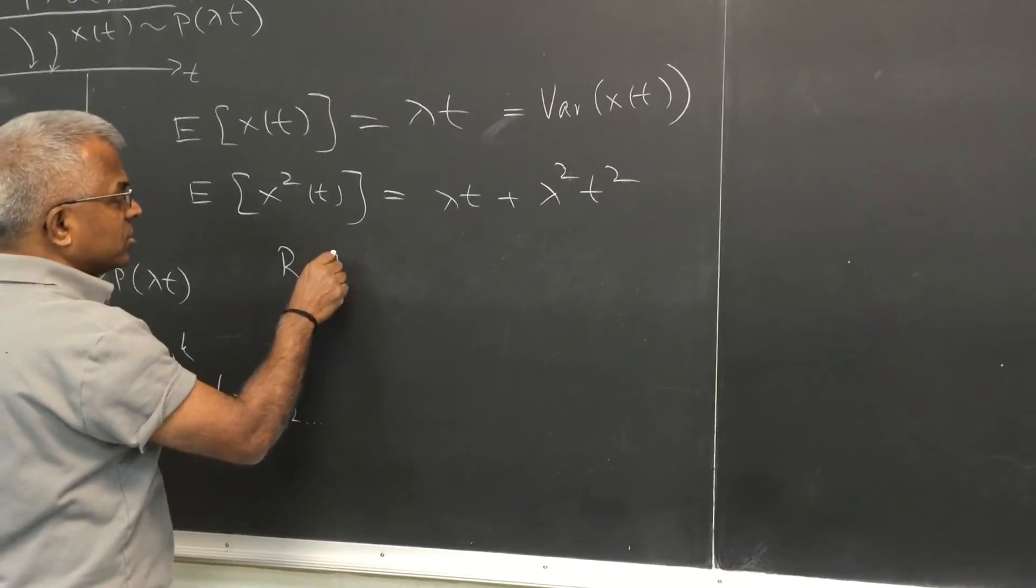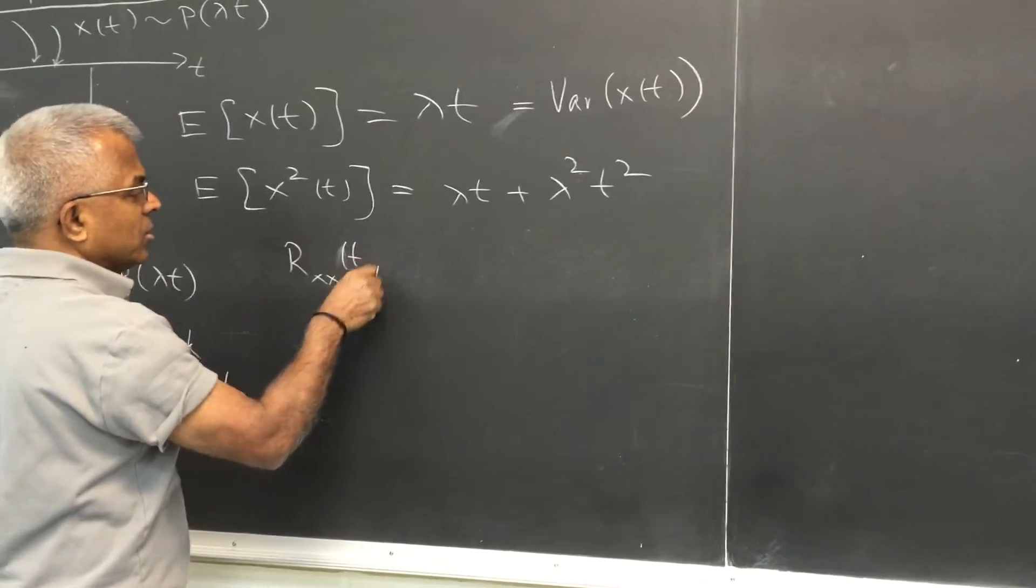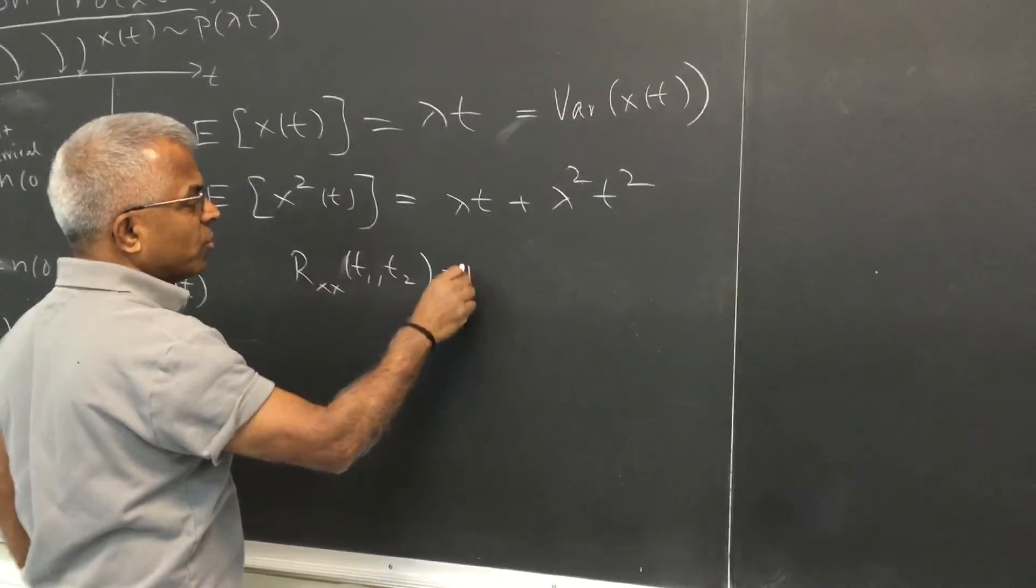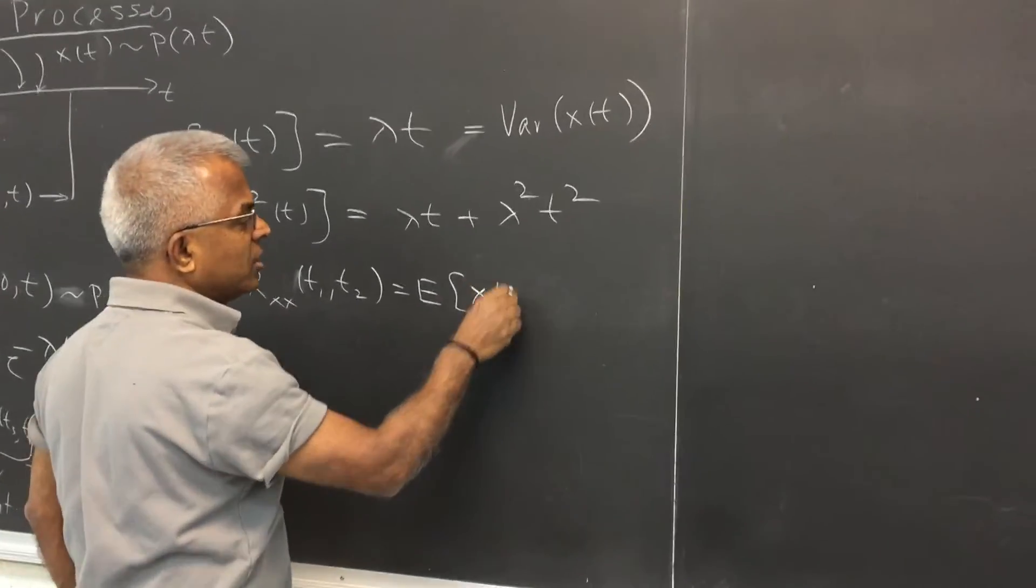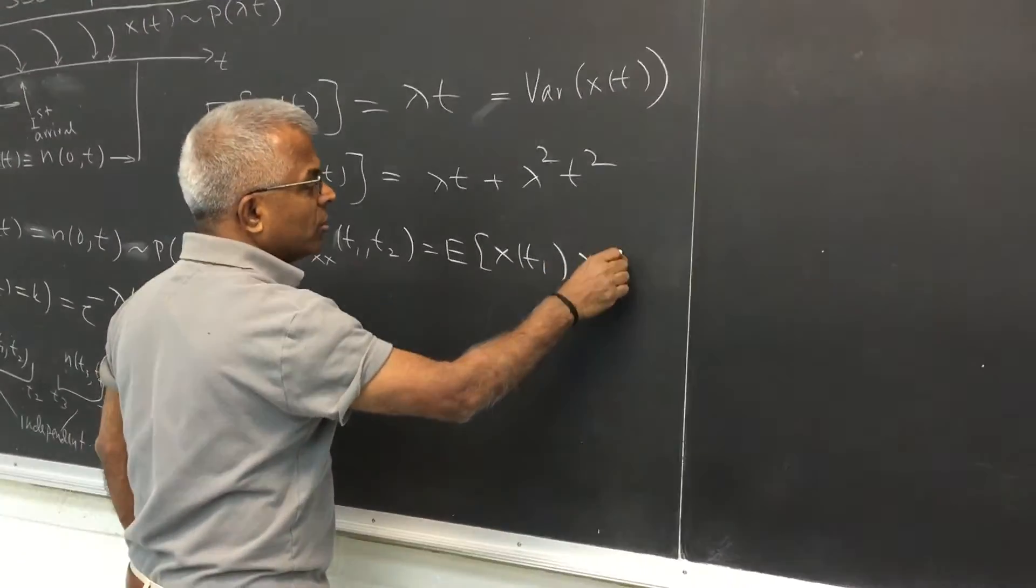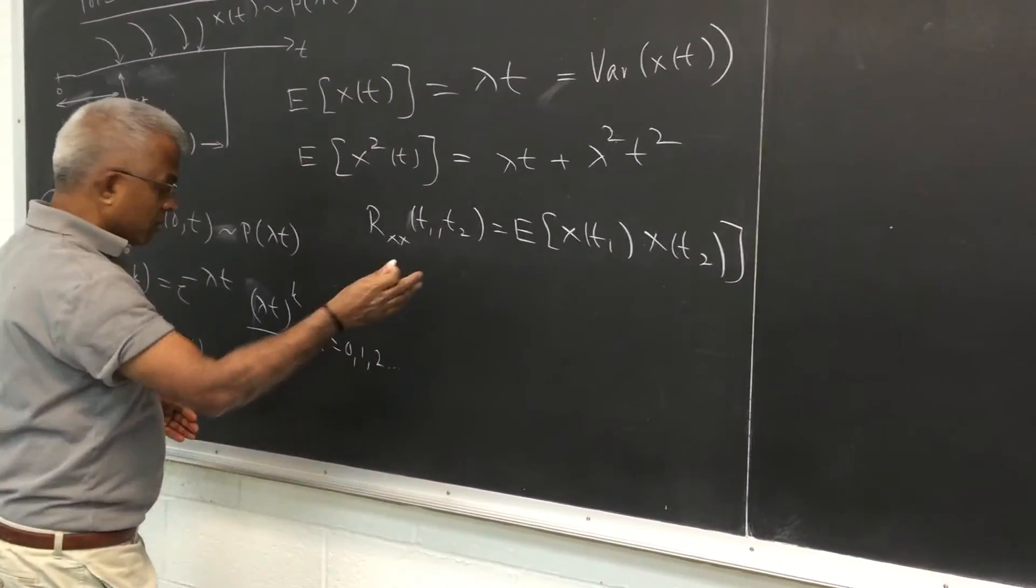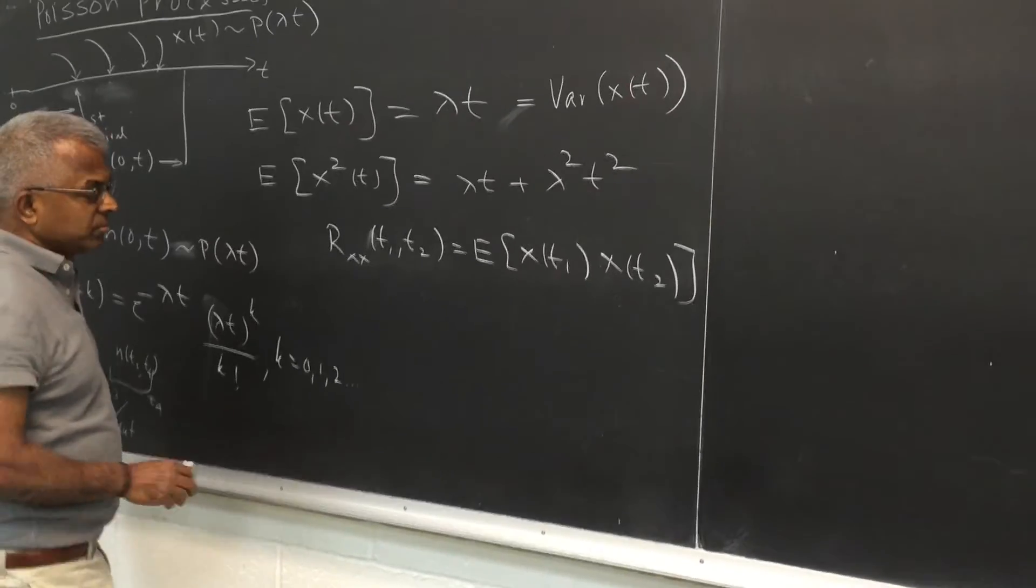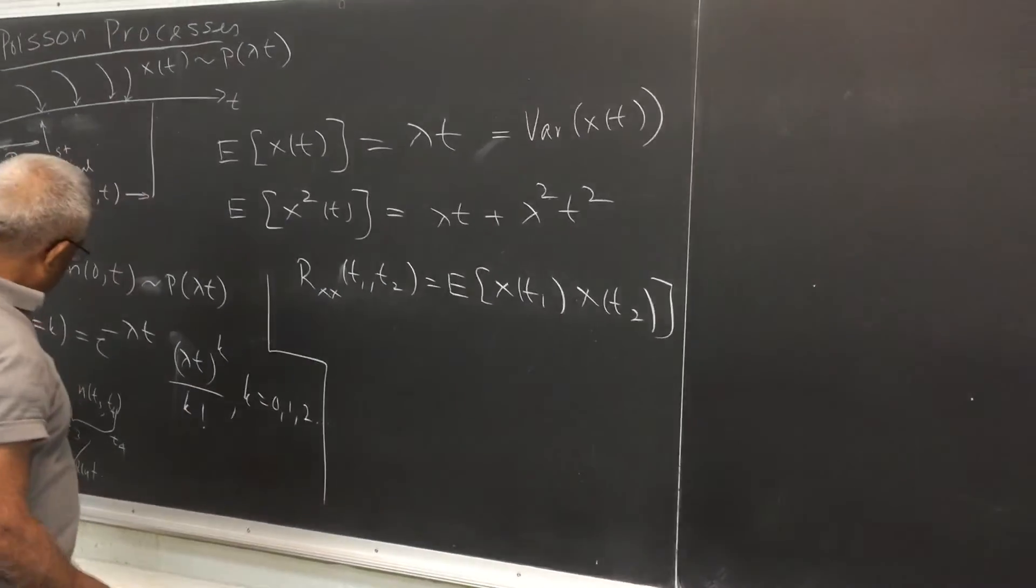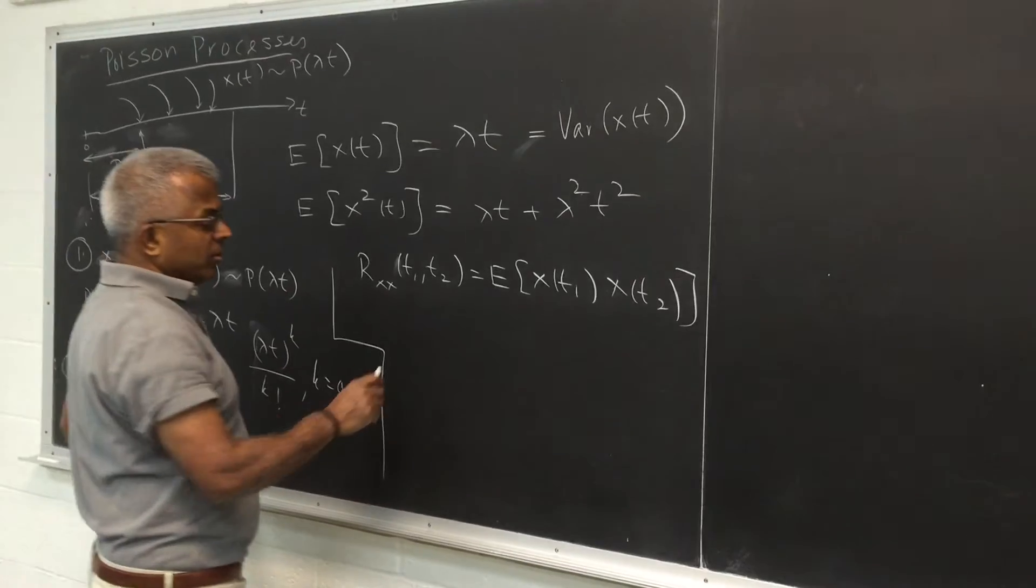Now the question is what is the autocorrelation function of this process. So this is of course expected value of x t1, x t2. Remember it's a real process. So we will try to do this exploiting this independent property.